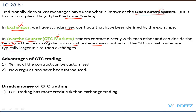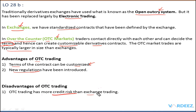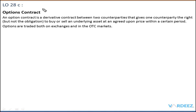There are two dedicated chapters coming up on exchanges and OTC markets, so we'll go into much more detail there. For now, the advantages of OTC trading include: terms can be customized, which is why many large corporations prefer it; and new regulations have been introduced that protect both buyer and seller rights, bringing more transparency to trading. The major disadvantage of OTC trading is that it has more credit risk than exchange trading — exchanges have mechanisms in place to reduce credit risk for both parties, whereas in OTC trading the credit risk is on a much higher scale.